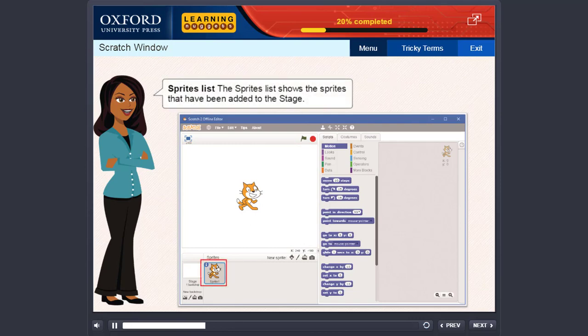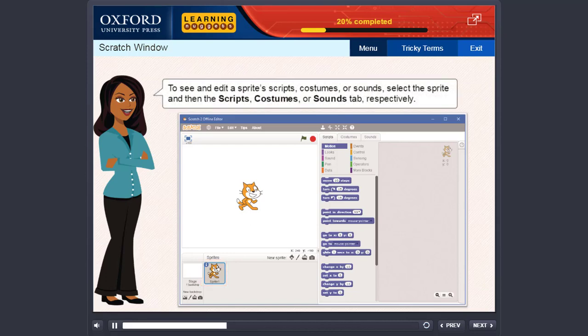Sprites List: The Sprites List shows the sprites that have been added to the stage. To see and edit a sprite's scripts, costumes, or sounds, select the sprite and then the scripts, costumes, or sounds tab, respectively.